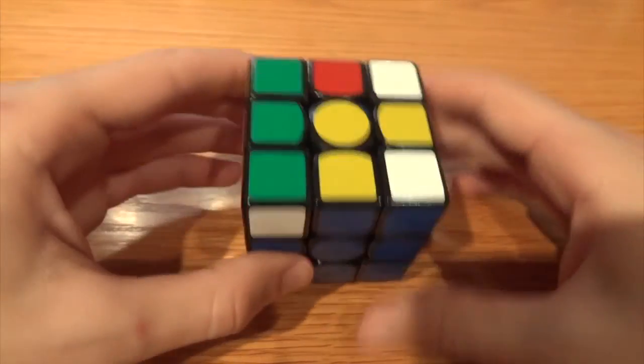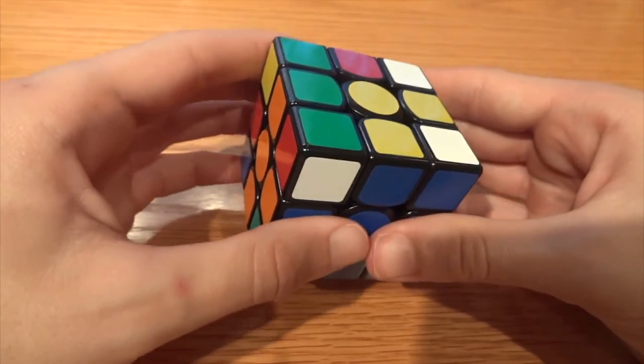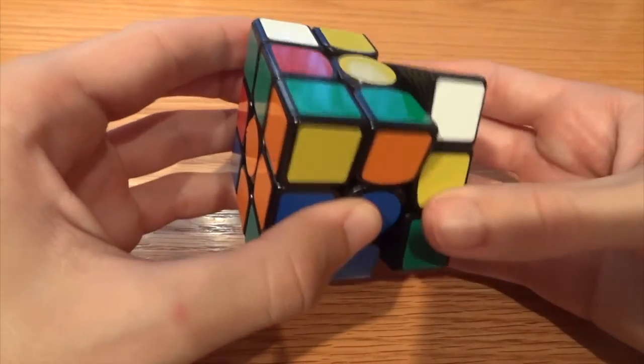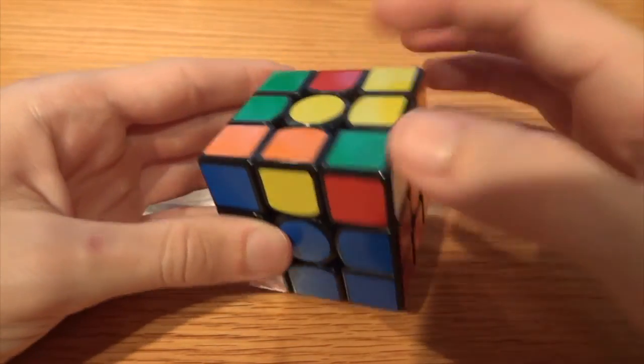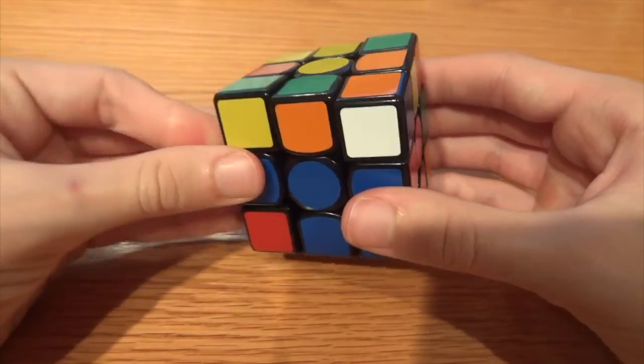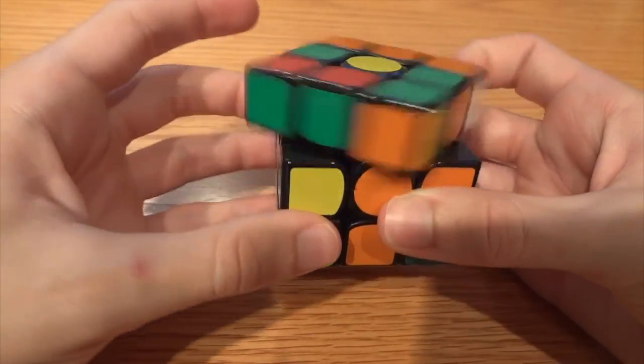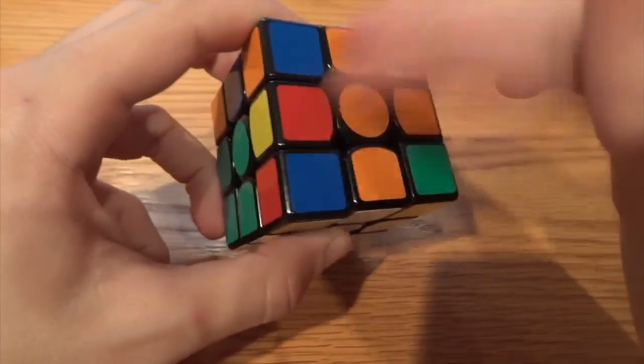My first F2L pair that I see is this one. And that's going to go here. So I'm going to put this in the back so that I have room to see what I'm doing. So now I've got two open slots in the front.